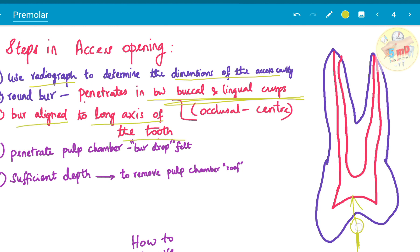Start in the center. The burr is aligned to the long axis of the tooth. As you move inside and once you reach the pulp chamber, you feel that burr drop. When you penetrate the pulp chamber, you feel the burr drop. And sufficient depth is reached to remove the pulp chamber roof completely.